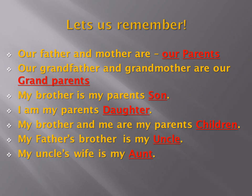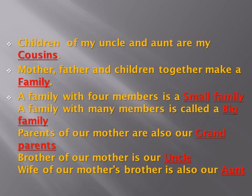My father's brother is my uncle. My uncle's wife is my aunt. Children of my uncle and aunt are my cousins. Mother, father and children together make a family. A family with four members is a small family. A family with many members is called a big family. Parents of our mother are also our grandparents. Brother of our mother is our uncle. Wife of our mother's brother is also our aunt.